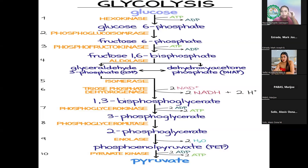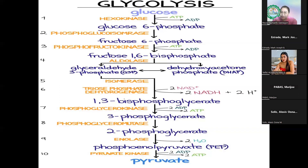Once glucose gets inside the cell, glycolysis will happen. As you can see on the screen, this is the process of glycolysis. Please be familiar with this pathway because it is high yield on the board exam, especially in Module 2. Most board exam questions revolve around pathways, and glycolysis is included. Memorize it — glucose is shown, and the yellow items are the enzymes.